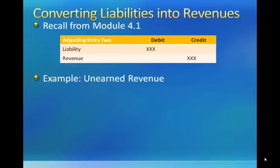When firms receive cash before the earnings process is complete, they have not earned the revenue yet and they are required to record a liability until the earnings process is complete. As the earnings process is completed — i.e., they deliver the goods or perform the service that they agreed to — they are then allowed to record the earned revenue and reduce their liability account balance through an adjusting entry.